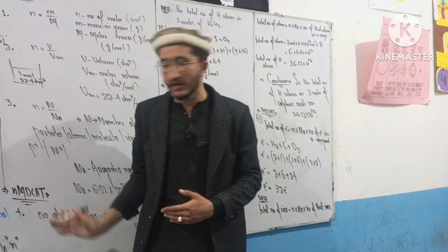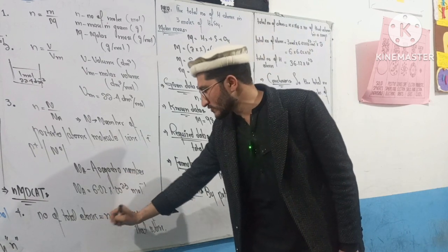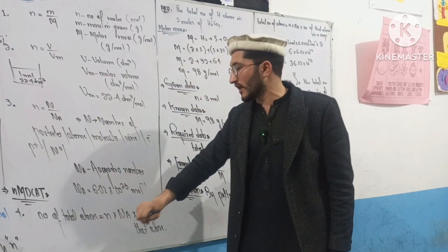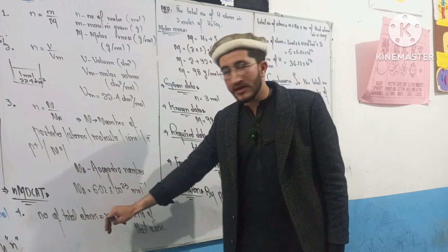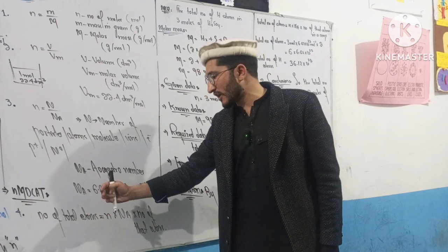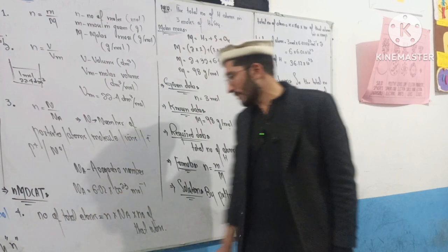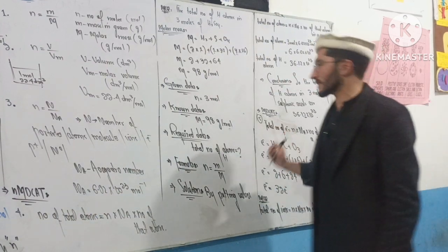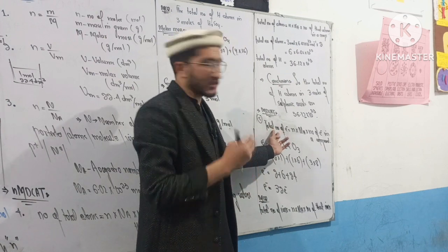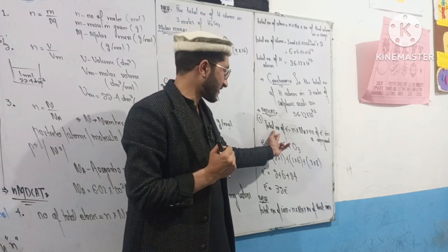These formulas can also be used to find the number of atoms, ions, electrons, protons, cations, and anions in a given number of moles of a compound. There is a specific formula for total number of electrons.